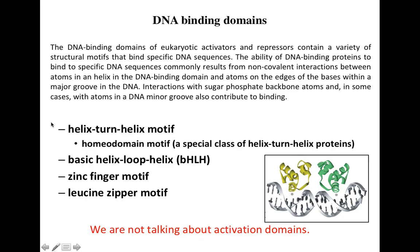There are different types of DNA binding motifs, generally divided into four types. The first type is the helix-turn-helix motif — we will also talk about homeodomain motifs, which are a special class of helix-turn-helix proteins. The second type is known as the basic helix-loop-helix domain. The third is the zinc finger motif, and the fourth is the leucine zipper motif. We are exclusively concerned about DNA binding domains here, not the activation domain.